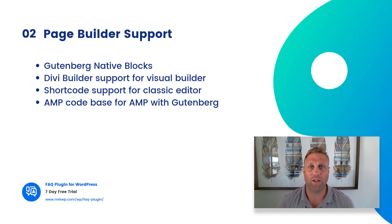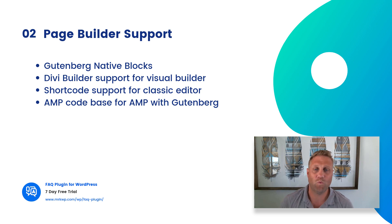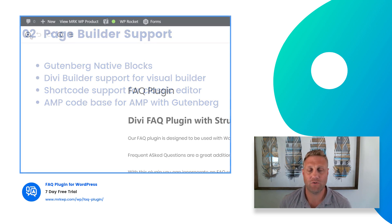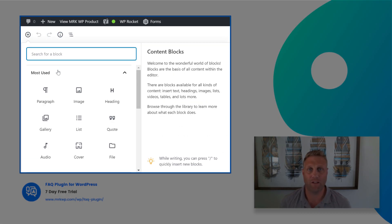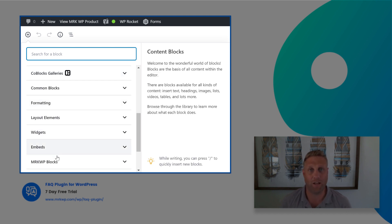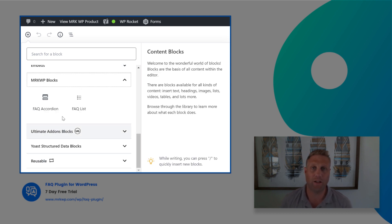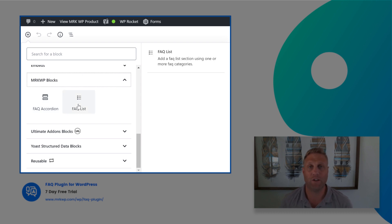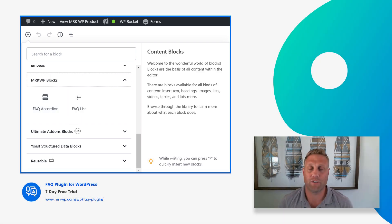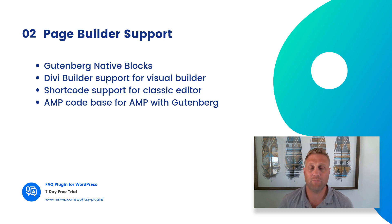We have page builder support within our FAQ plugin. The most important one being Gutenberg. If you're using WordPress 5 or greater, we have two blocks — a listing tool and an accordion tool — available for your FAQ items to be displayed on any page. You can also display by multiple categories, so you can insert a block and say, display these categories of FAQ items on my page.